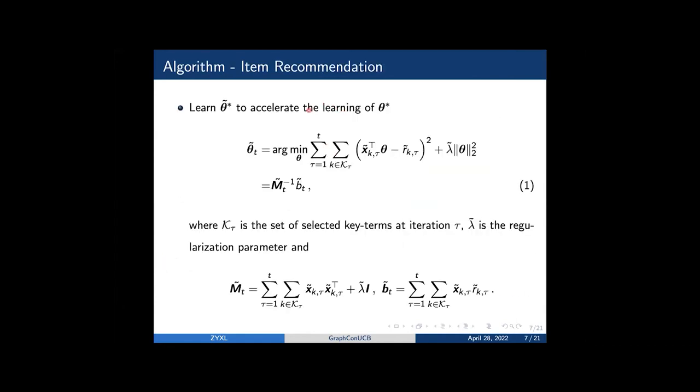We now introduce how we conduct item recommendation. We assume there is a linear structure over the user preference, so we learn to accelerate the learning of tilded c star by ridge regression. Here, tilded M is a gram matrix generated by the selected key terms, and tilded lambda is the regularization parameter.